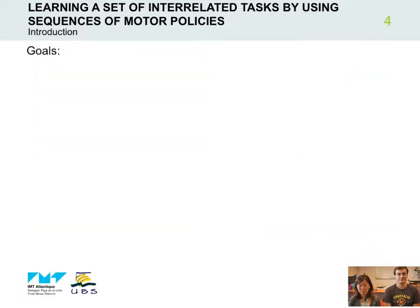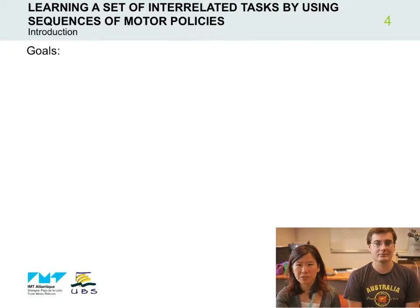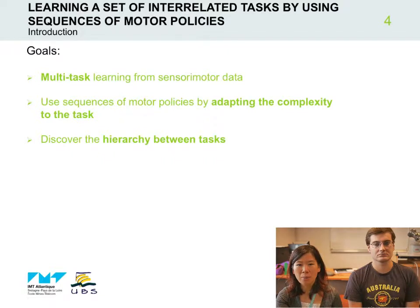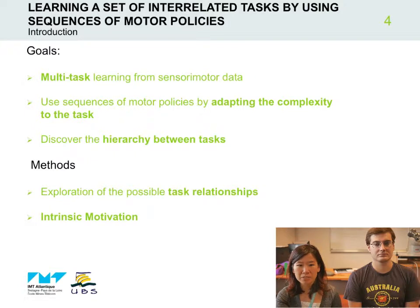To summarize, our goal in this study is to enable a robot to learn from sensory motor data in a multiple task learning setting, and to allow it to adapt the complexity of its actions to the task at hand using sequences of motor policies. Our idea is that it can use the hierarchy between tasks to bootstrap its learning. But this hierarchy is not given in advance — the robot needs to discover and learn the relationship between tasks by itself. The method we propose is to have the robot explore its environment and specifically the possible task relationships in a goal-oriented manner.